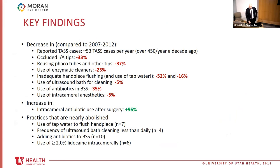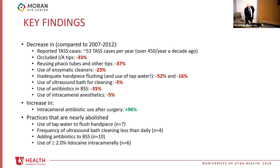The key findings show a significant tenfold decrease in TASS cases — about 53 cases per year compared to over 450 cases per decade ago. Poor cleaning practices and improper product use have decreased across the board. There's also an increase in intracameral antibiotic use, suggesting it has become a safer practice after early formulation issues were resolved. Some practices have been nearly abolished, such as using tap water to flush out a handpiece.